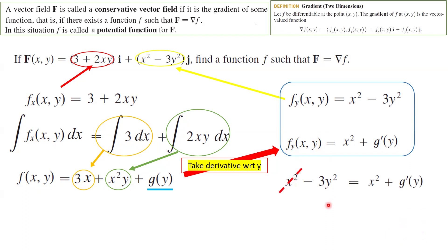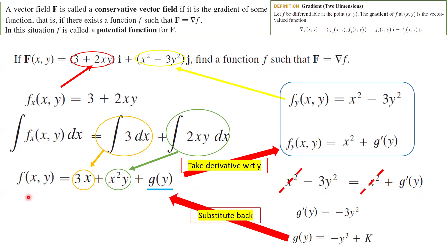X squared cancels from both sides, leaving g′(y) = −3y². Taking the integral of both sides with respect to y gives g(y) = −y³ + K. Substituting back, the potential function is f(x, y) = 3x + x²y − y³ + K. That's how we found the potential function. If you take the gradient of this function, you recover the original vector field.